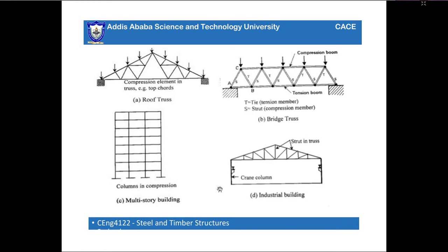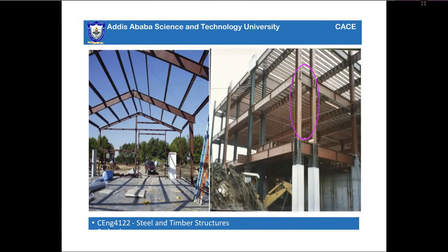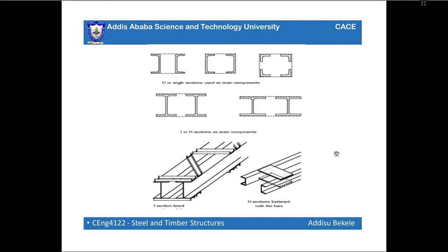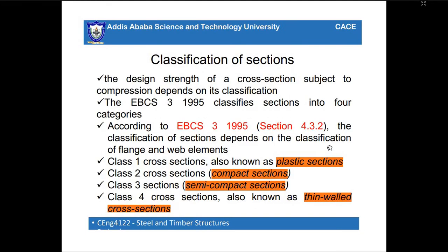Examples of cross sections used for compression members include double sections, universal column sections, built-up sections, box sections, double angle sections, CHS (circular hollow sections), and RHS (rectangular hollow sections). In this unit, the most important topic is the classification of cross sections.